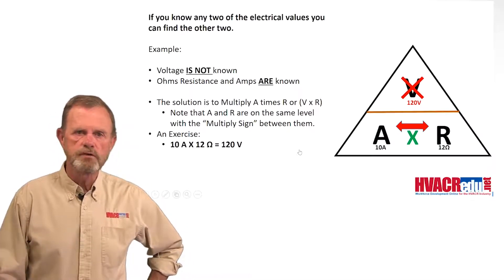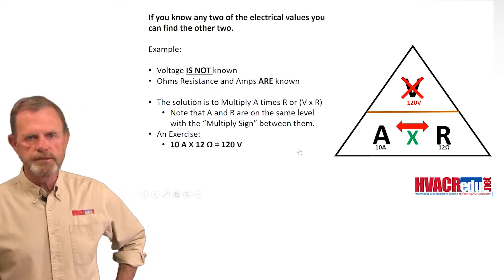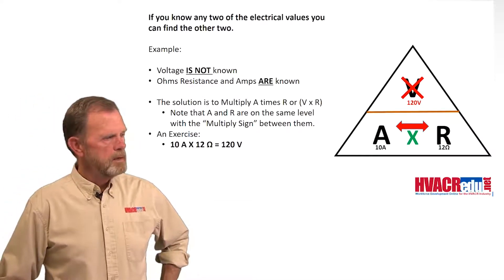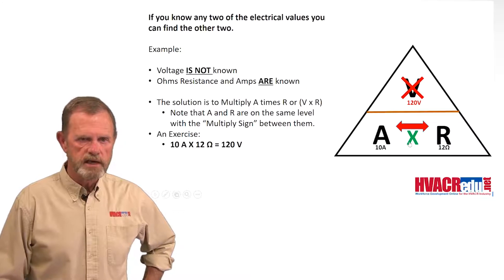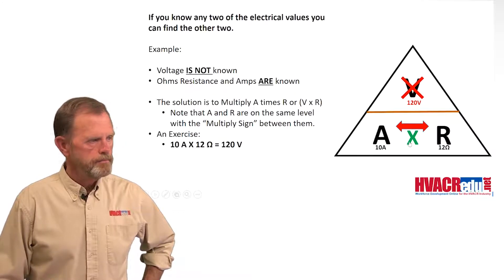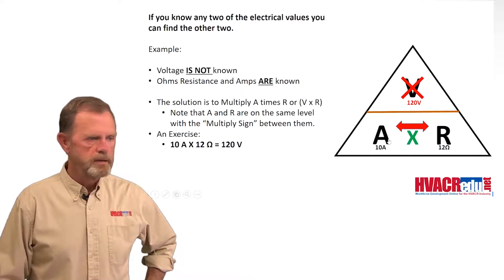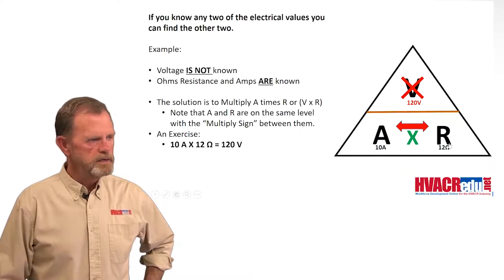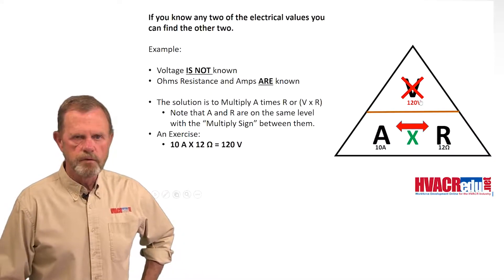This time we don't know voltage but we know amperage and we know resistance. We use the multiplication sign. It's very simple: 10 amps times 12 ohms resistance is going to give me 120 volts.